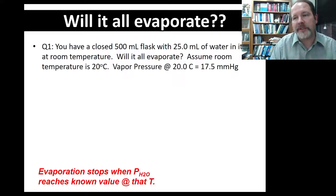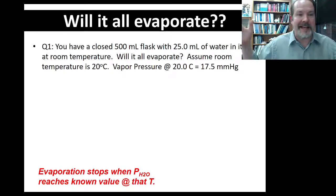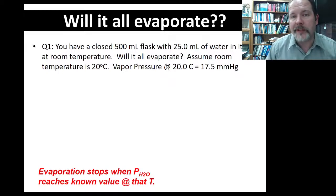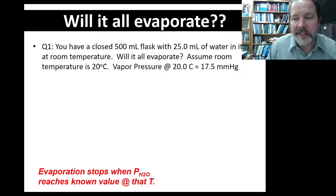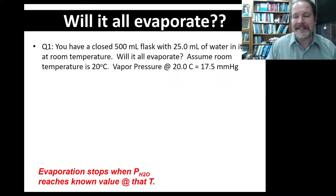Let's say you have a 500 mL volumetric flask, or a flask of some sort, and it's closed — it has a lid on it — with 25 milliliters of water inside it. Will it evaporate? Will some of it evaporate? Assume room temperature is 20 degrees. An important bit of information you need is that the vapor pressure of water at 20 degrees is 17.5 millimeters of mercury, and that's not a whole lot.